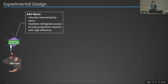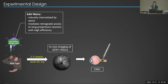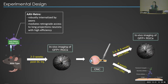For this study, I'm using AAV retro shRNA-GFP. This AAV retro capsid allows for robust internalization by axons and mediates retrograde access to long projection neurons with high efficiency. Two to three weeks after injection, I perform optic nerve crush, taking baseline in vivo images and counts before the injury. Then at two, four, and eight weeks I do follow-up images and counts to track progression of retinal ganglion cell pathology.